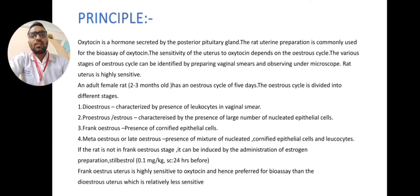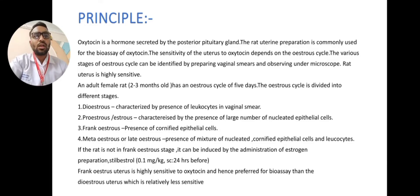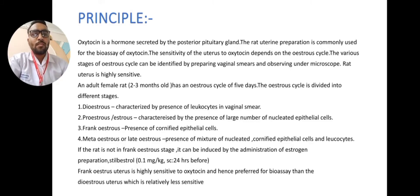The principle of our topic is: oxytocin is a hormone secreted by the posterior pituitary gland. The rat uterine preparation is commonly used for the bioassay of oxytocin. The sensitivity of the uterus to oxytocin depends on the estrous cycle. The estrous cycle occurs in non-primate mammalian females and refers to cyclic changes occurring due to the reproductive phase of an animal. The various stages of the estrous cycle can be identified by preparing vaginal smears and observing them under a microscope.